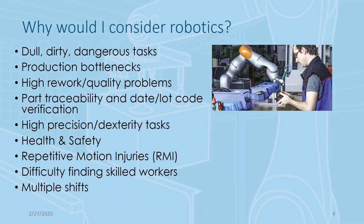What we typically consider initially for robotics applications are high-volume processes — making hundreds of thousands of parts per year at high speed. Another area is what I call long-duration tasks. For example, welding parts on an I-beam might take three or four hours to complete, or riveting applications on a fuselage. These aren't necessarily high-volume industries, but tasks like grinding, deburring, polishing, and welding take a long time and are great applications for robots.